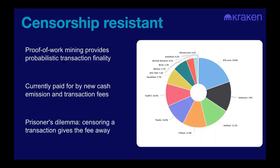This leads to one of the interesting sayings in Bitcoin: Bitcoin is for enemies. People who don't like each other can all use Bitcoin because they can't control it or force others off the network.